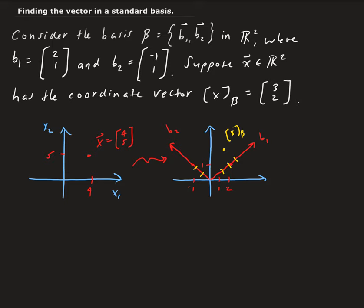So the vector x is going to be, we're going to form the linear combination of b1 and b2, where the weights are coming from the vector of x in terms of beta.